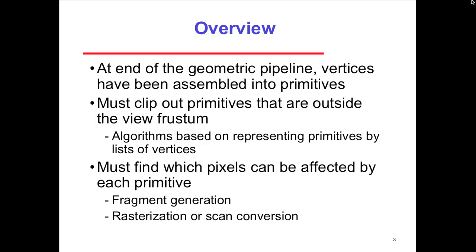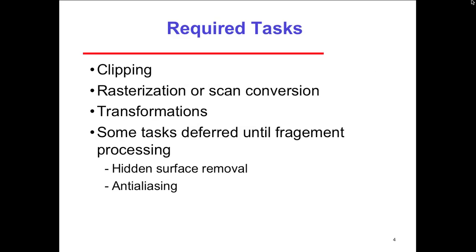We must find which pixels can be affected by each primitive. We have fragment generation, rasterization, or scan conversion. I'll talk a little about scan conversion — you don't have to implement any of this in OpenGL; these are concepts implemented for you. None of the programming assignments will have you implement this. It's just conceptual theory to go along with things we've been looking at so far.